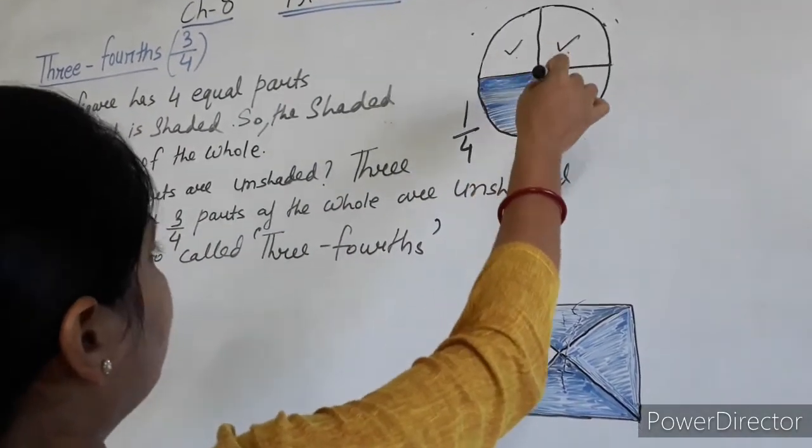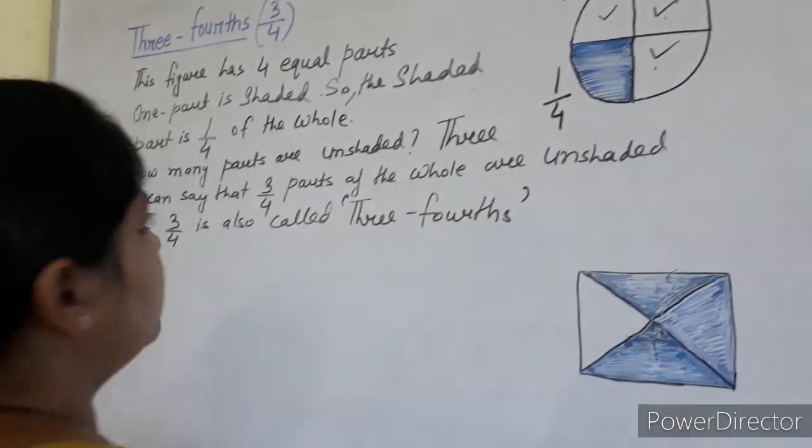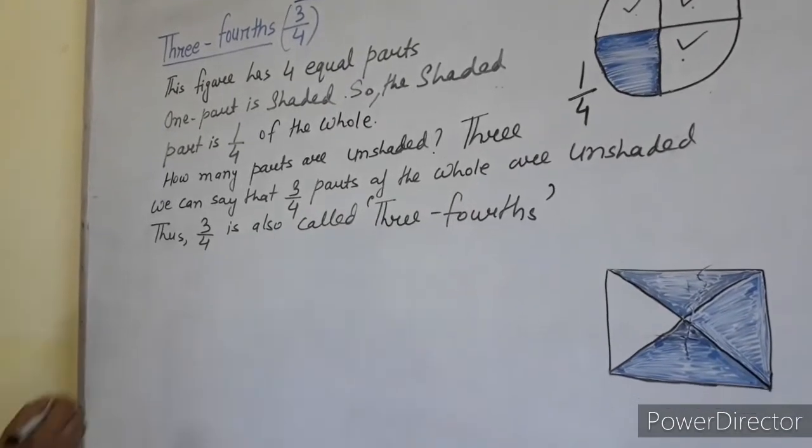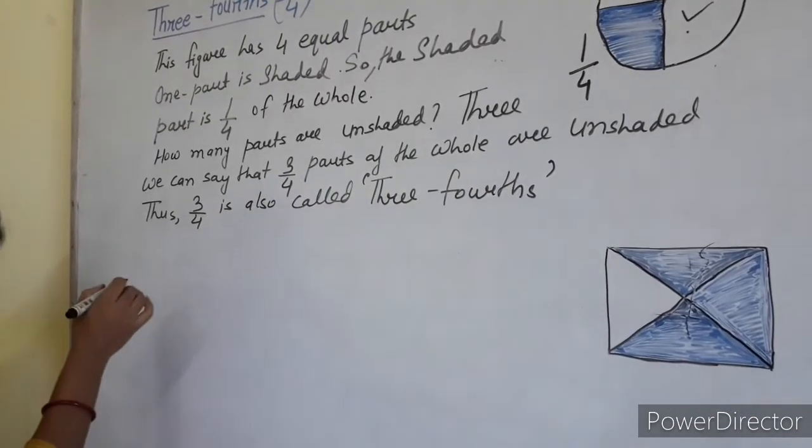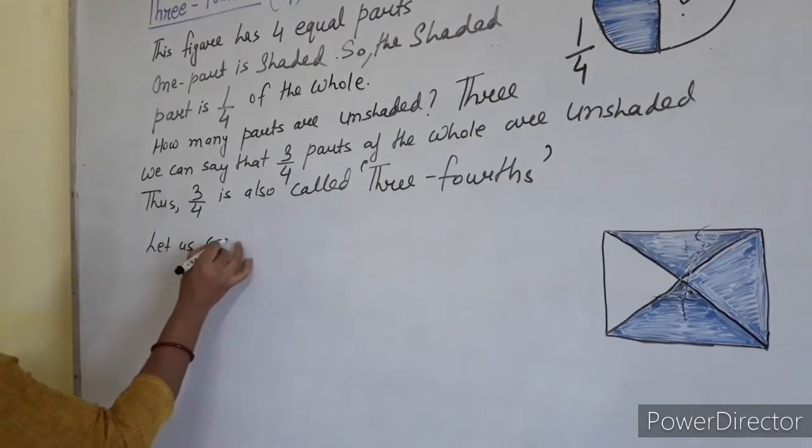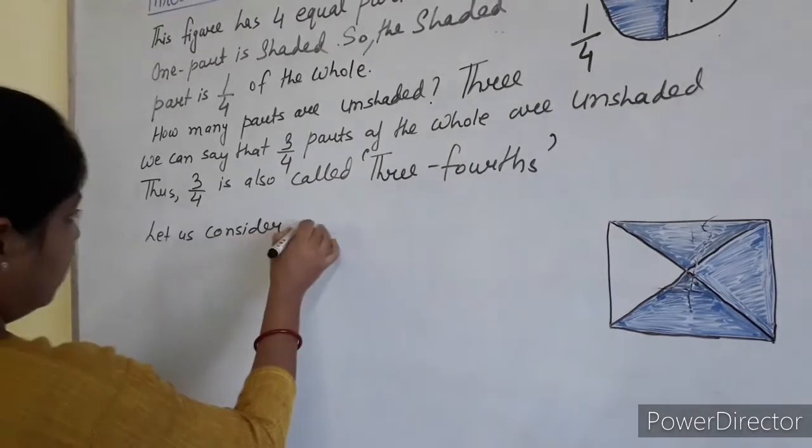The 3 by 4th parts of the whole are unshaded. So this is also called 3 fourths. And let us consider another example. Consider another example.